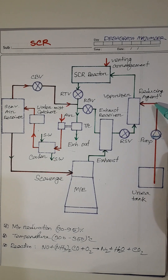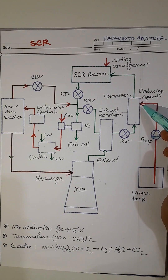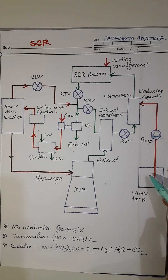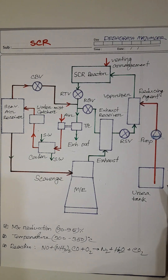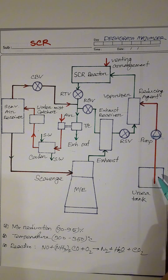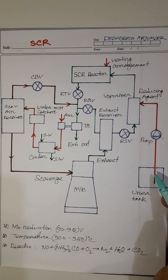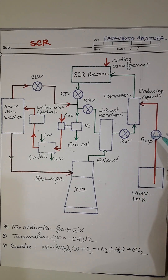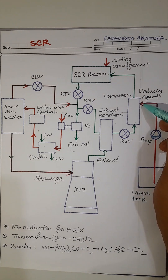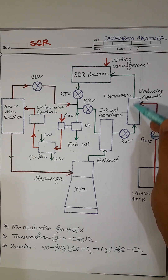Here you can see the reducing agent line. This is the reducing agent pump, this is the injector, and here is the reducing agent tank. Urea is used as the reducing agent; ammonia also can be used. The amount of reducing agent in this tank will be dependent upon the vessel trading area and how much time the vessel travels in the Tier 3 area. Through this pump, the urea is taken from the urea tank and through the injector it is injected into the vaporizer or mixer.